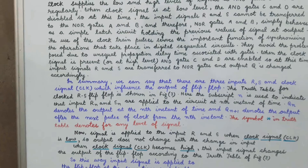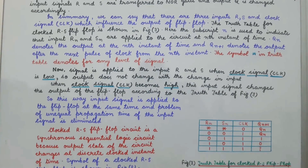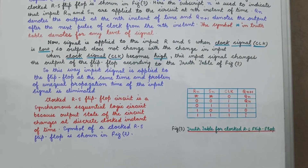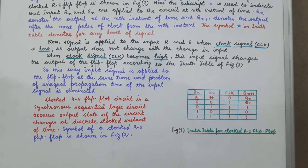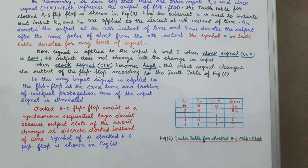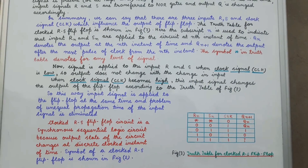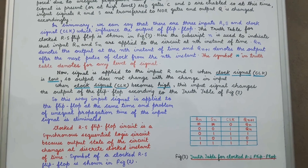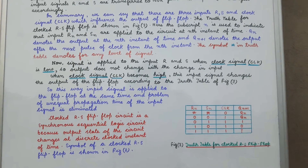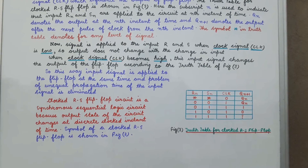Now a signal is applied to inputs R and S. When the clock signal is low, we apply input R or S to AND gate C or D.